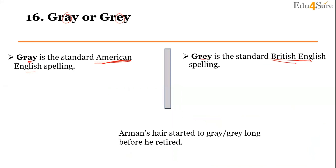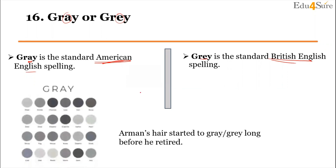For example: 'Arman's hair started to gray long before he retired.' Whether you use gray or grey, both refer to the same color — it just depends on whether you are using American or British English.